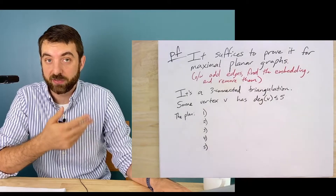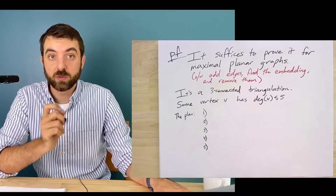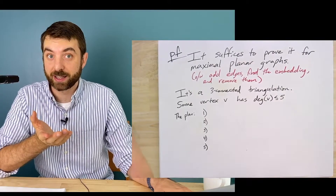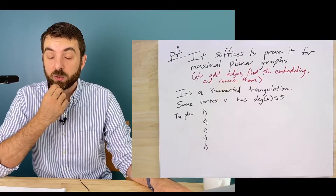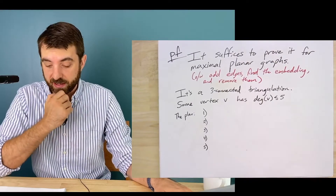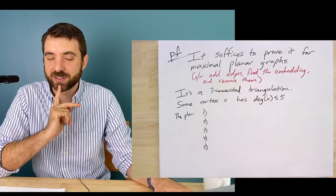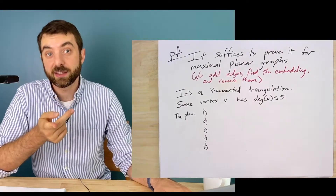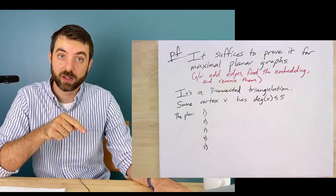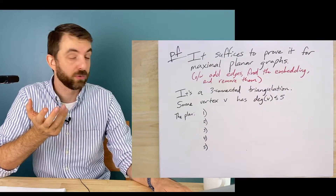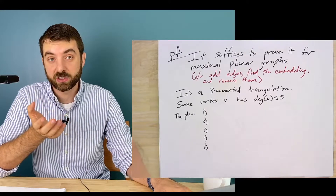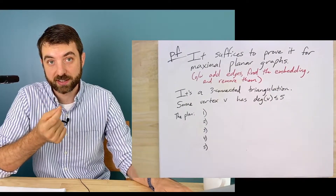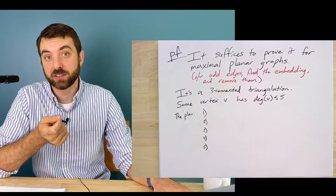If it's not a maximal planar graph, you can keep adding edges and assume it is. So we're going to assume we're finding a linear embedding of a maximal planar graph. We know some things about maximal planar graphs: they're three-connected, their faces are all triangles, and every planar graph has a vertex of degree at most five. We got this from Euler's formula, which shows no planar graph can have more than 3n minus six edges, so the average degree must be strictly less than six — meaning at least one vertex has degree at most five.